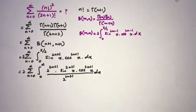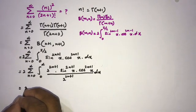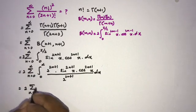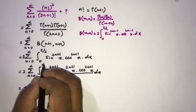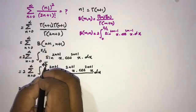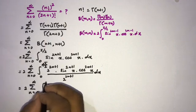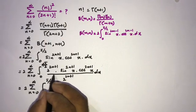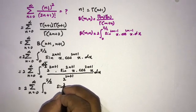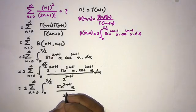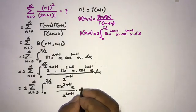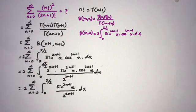In the numerator we can apply the double angle formula. So we get 2 times the sum from n equals 0 to infinity, integral from 0 to pi over 2, of sine raised to the 2n plus 1 of x over 2 raised to the 2n plus 1, dx.